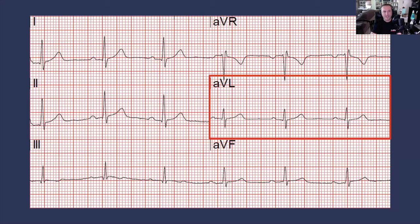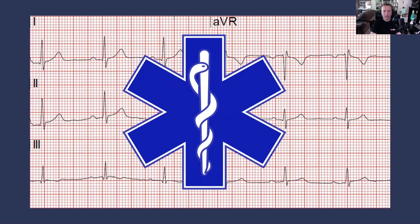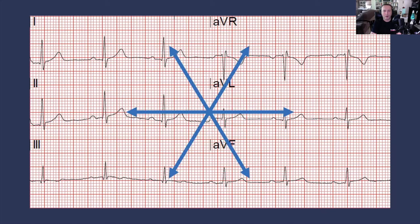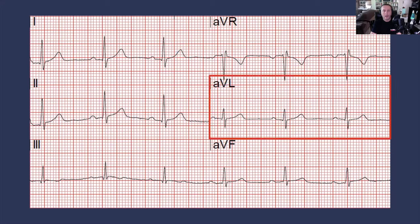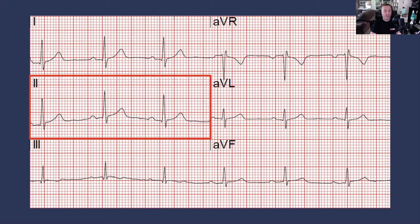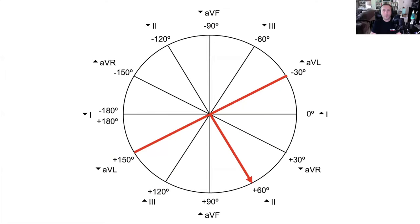Now we know the heart's electrical axis is moving perpendicular to the positive electrode that makes up lead AVL. Which of these six leads is perpendicular to lead AVL in the hexaxial reference system? The easiest way to determine that is to take the star of life shape — a star with six sides — turn it on its side, and replace that with arrows. You will see that lead 2 is perpendicular to lead AVL in the hexaxial reference system. Leads 1 and AVF are perpendicular, and leads AVR and lead 3 are perpendicular.